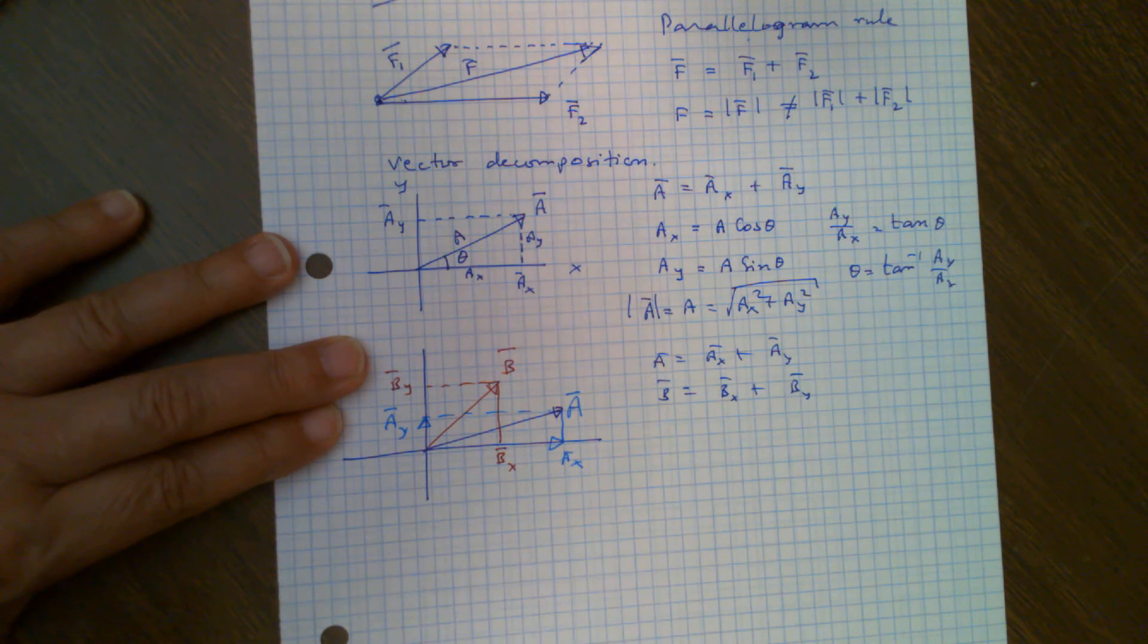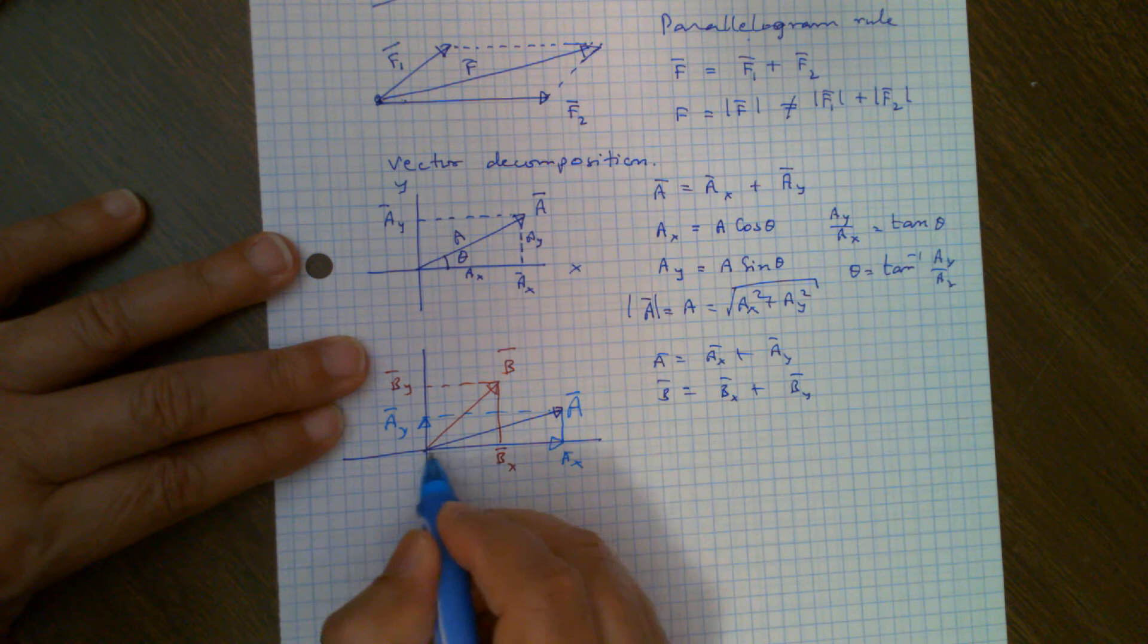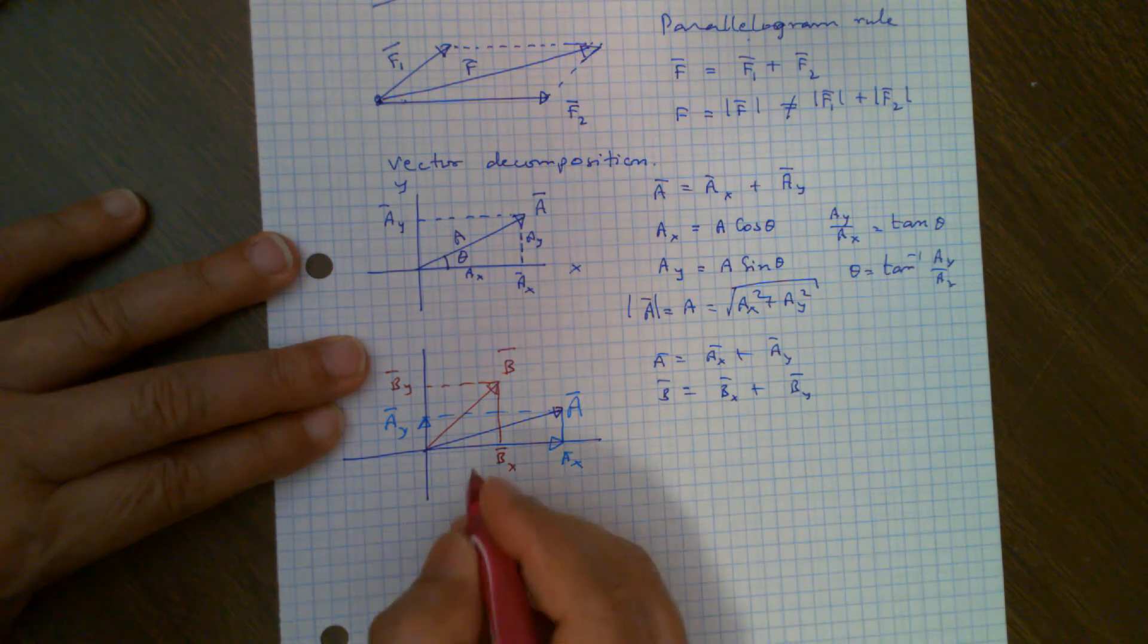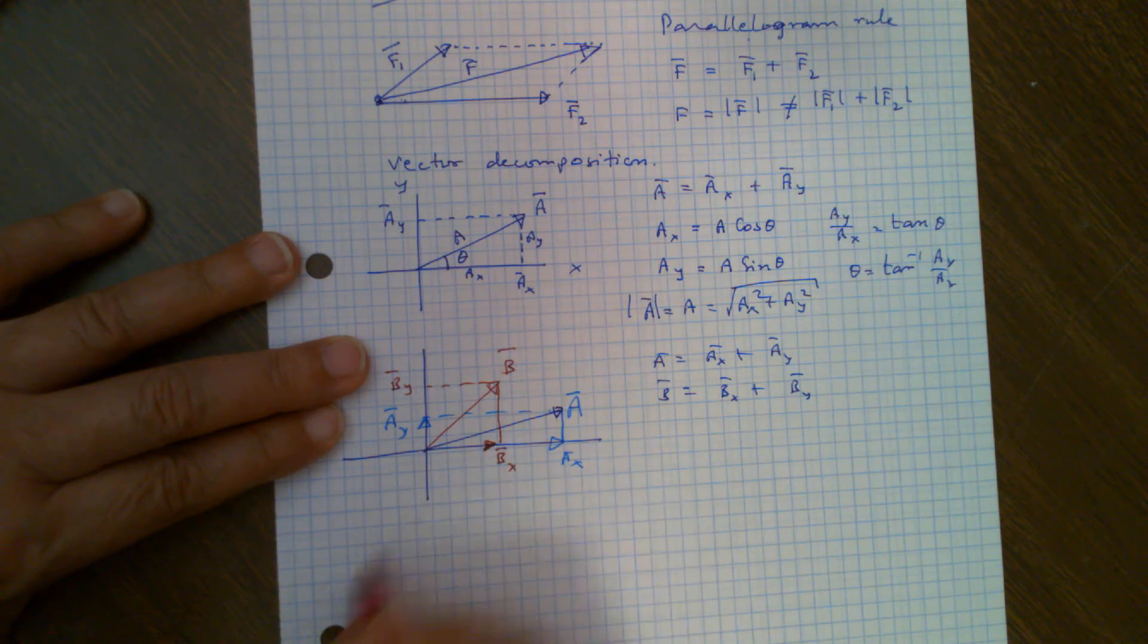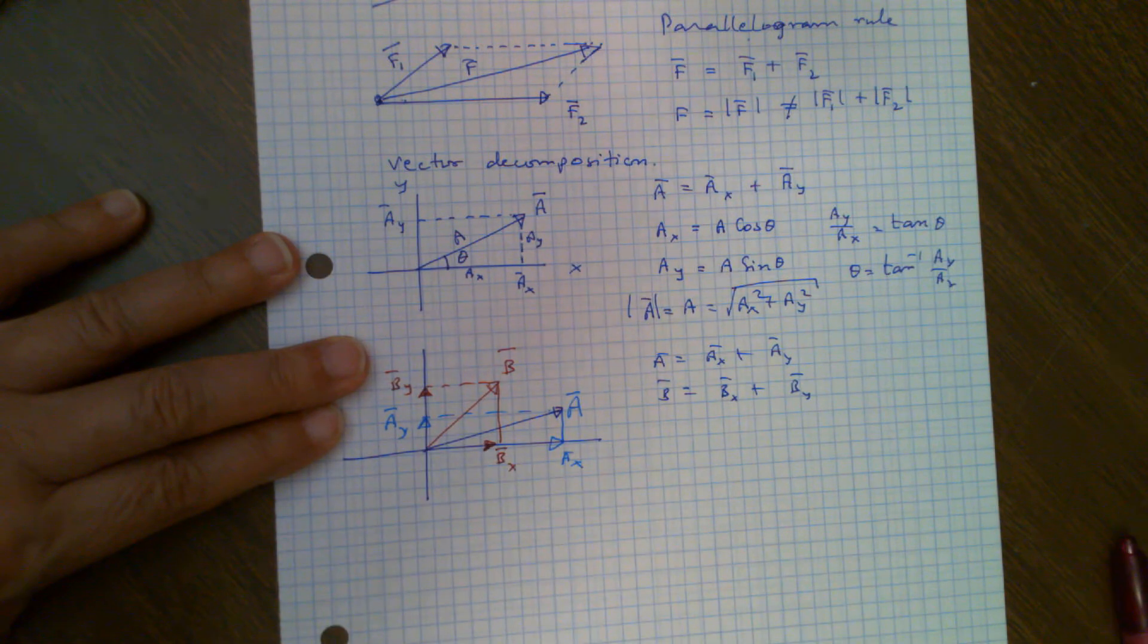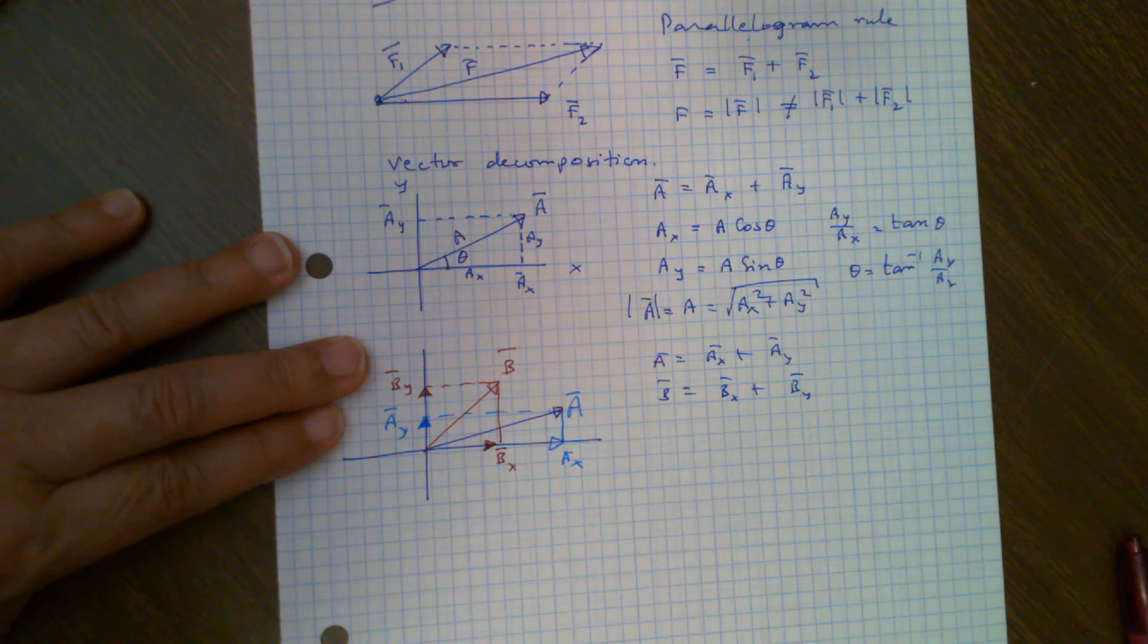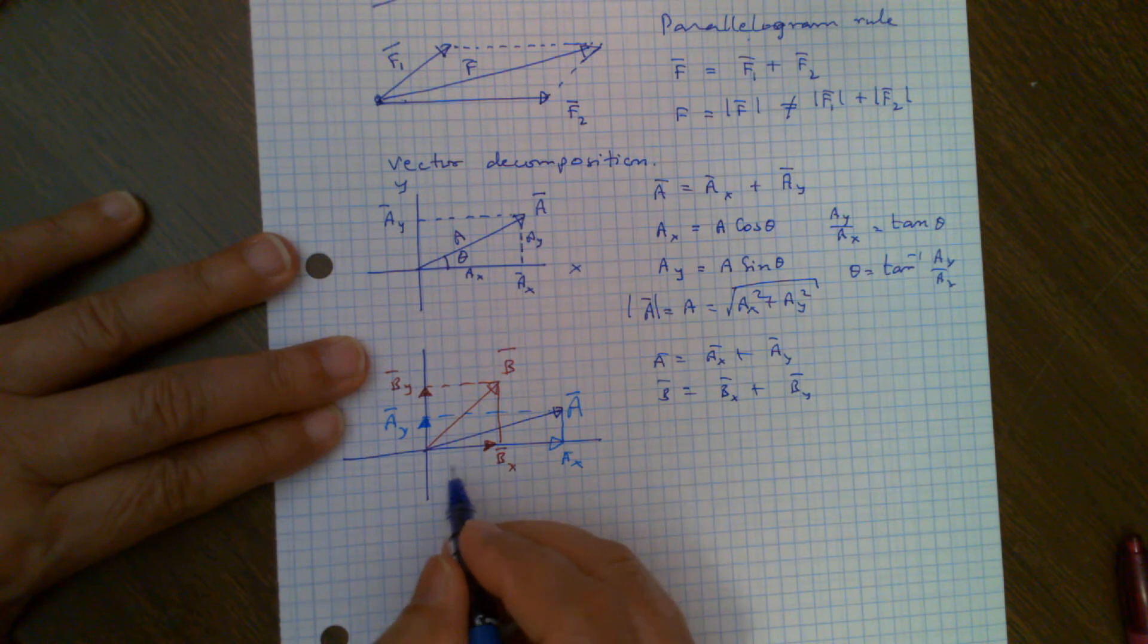So now look here. This vector A has two components, AX and AY. AX is in this positive X direction. What about BX? BX is also in the positive X direction. And BY is in the positive Y direction. And AY also is in positive Y direction. So obviously, AX and BX are in the same direction.